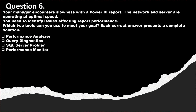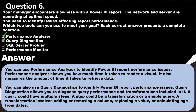Question number 6. Your manager encounters slowness in the Power BI report; the network and server are operating at optimal speed. You need to identify issues affecting the report performance. Which two tools in Power BI can help you meet your goal? The four options are performance analyzer, query diagnostics, SQL Server Profiler, and performance monitor. The correct answer is performance analyzer and query diagnostics. Performance analyzer shows how long it takes to render a visual and measures the time to retrieve data. Query diagnostics allows you to diagnose query performance and transformations, so you use both to identify where your Power BI reports are getting stuck.